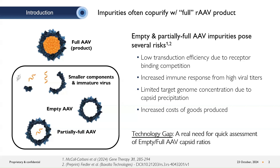Many of the conventional methods, like analytical ultracentrifugation, SEC models, and ddPCR, are well known to be time-consuming, require advanced training or expertise, or are not quantitative amongst other limitations. Quantification of the full AAV product purity is often left to the end of purification as a result.